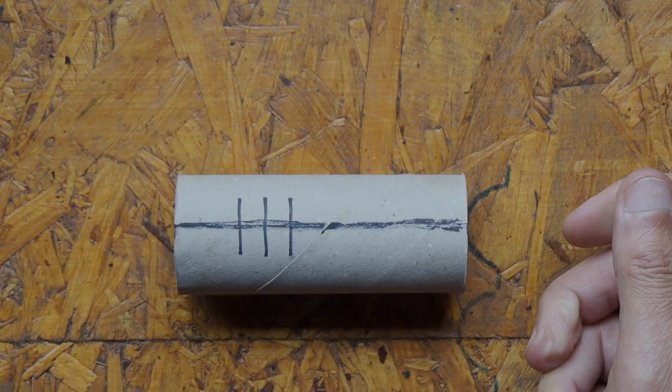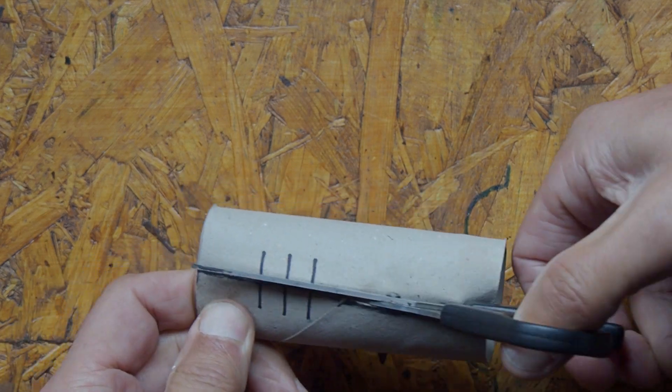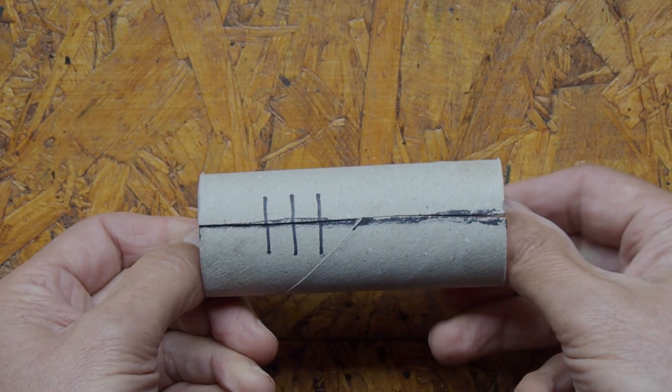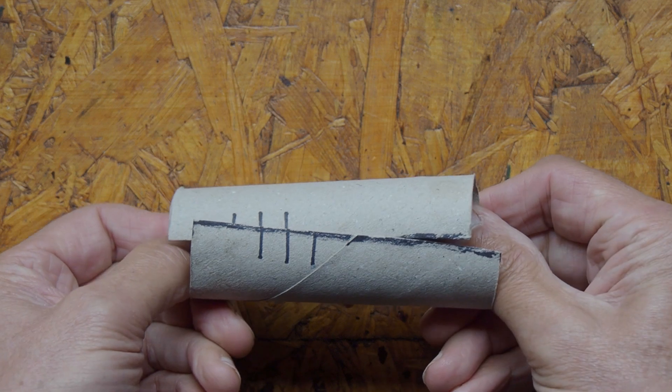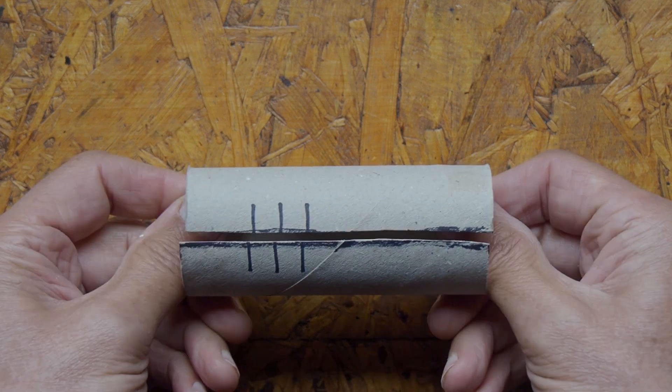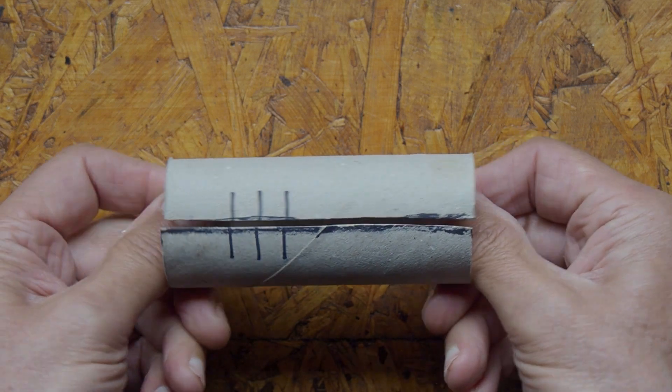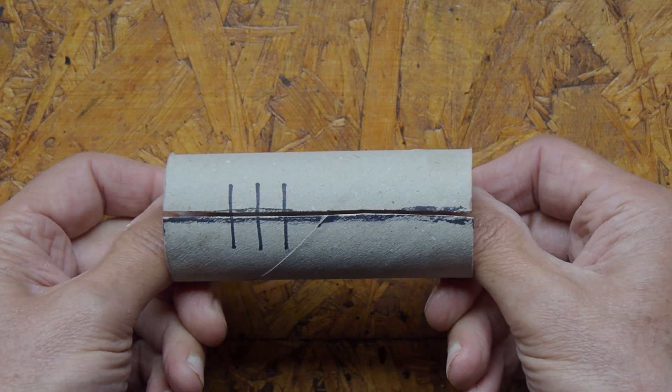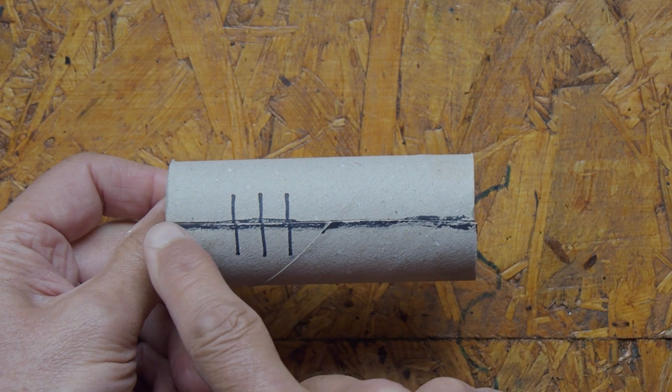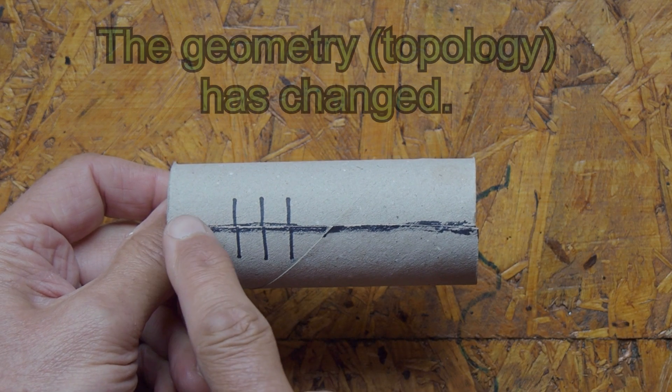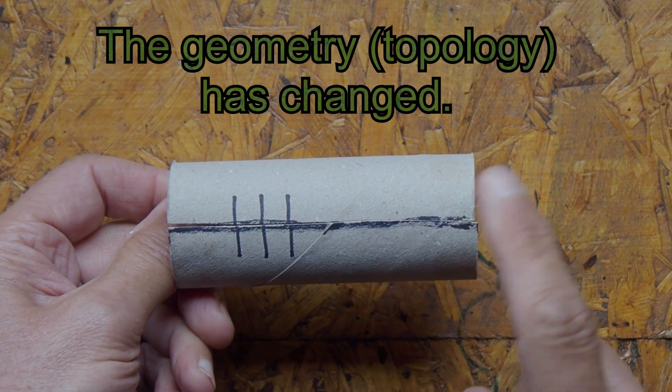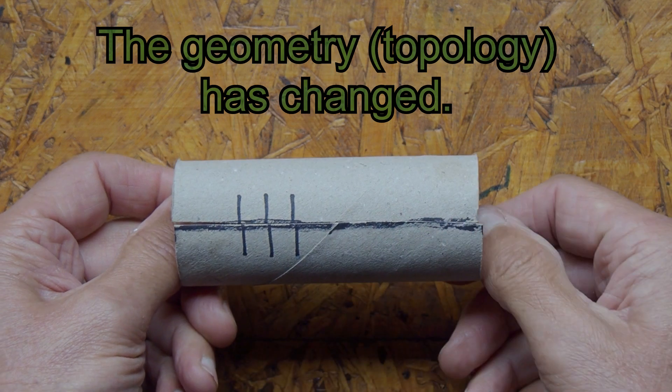I convert it to an open section by cutting along the length of the tube. Now if I put a torque on it, you can see that it is visibly less stiff and those three lines shift relative to each other. This cardboard tube example shows a huge change in the stiffness when going from closed to open section, despite there being exactly the same amount of material in both cases.